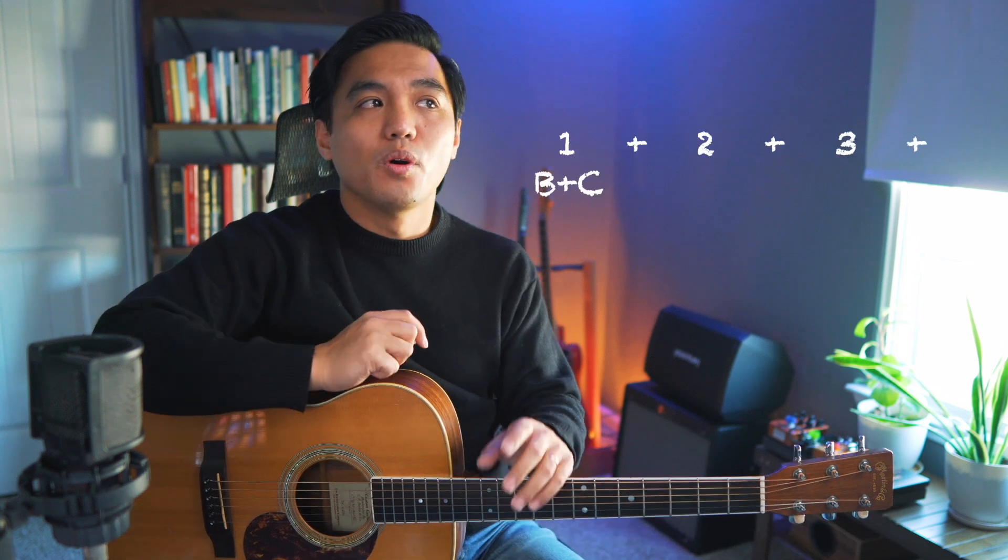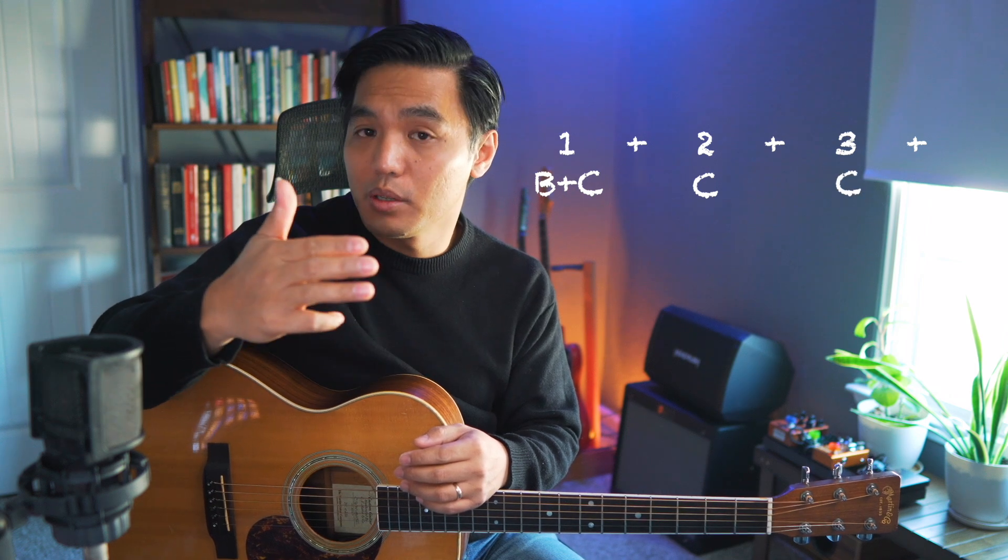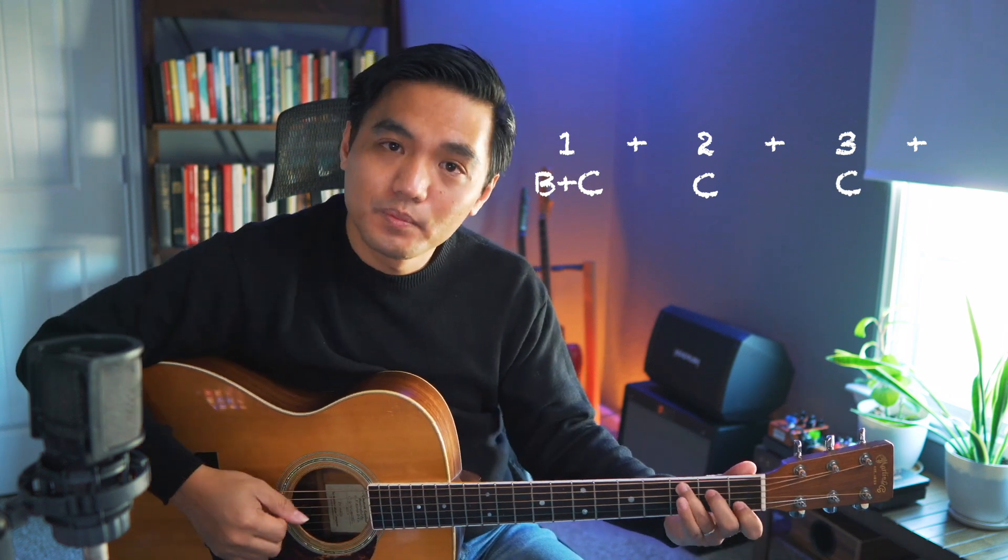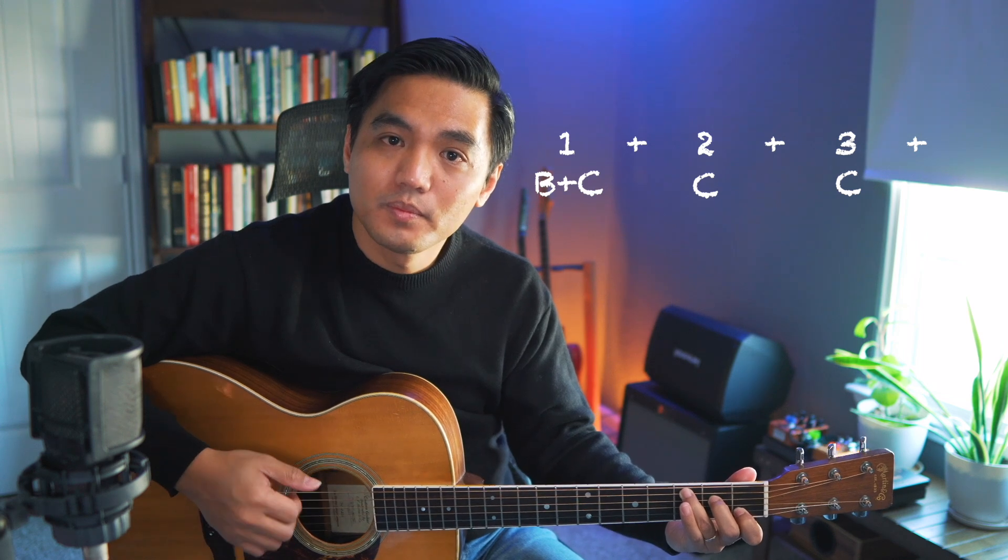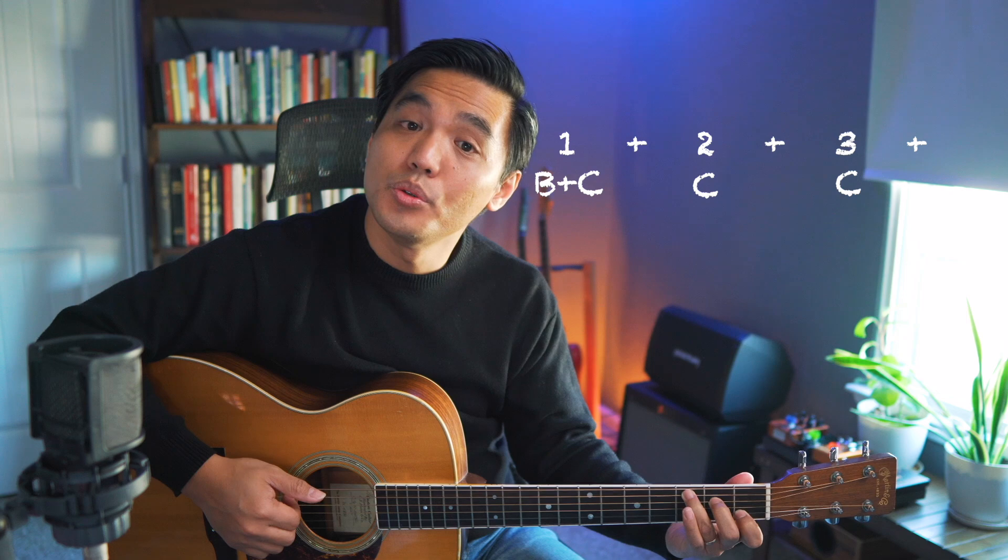So to get this pattern down, start by thinking of playing the bass with your thumb. And then chords are separate that will be played with your fingers. On beat 1, you're going to play bass and chord at the same time. Beat 2 is just going to be chord. Beat 3 is just going to be chord. Like this: 1, 2, 3. 1, 2, 3.